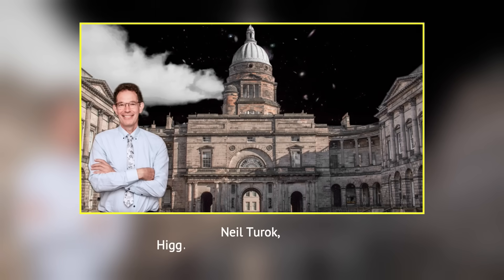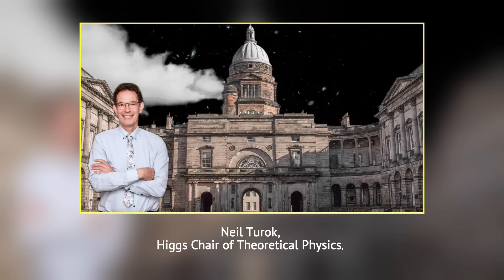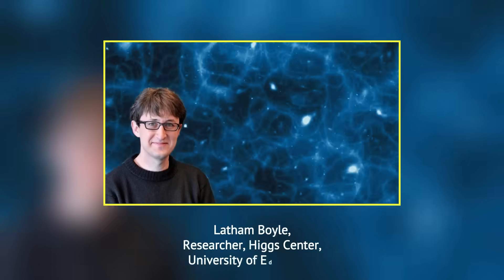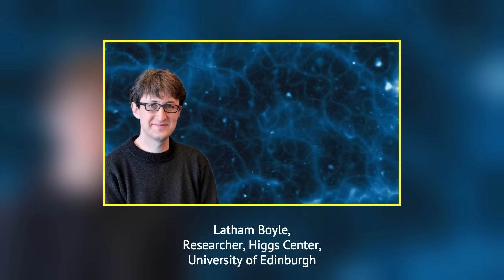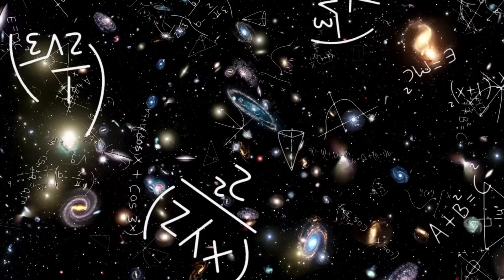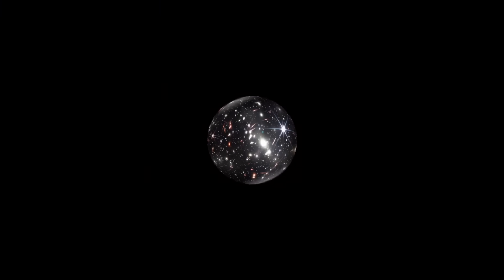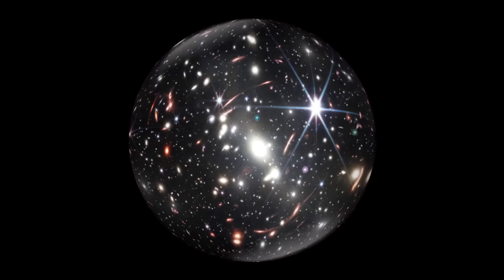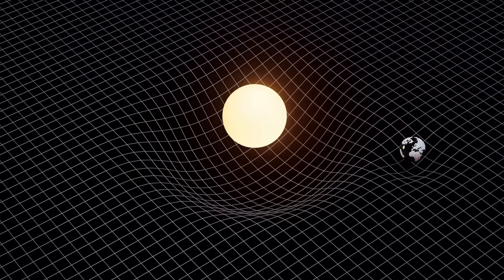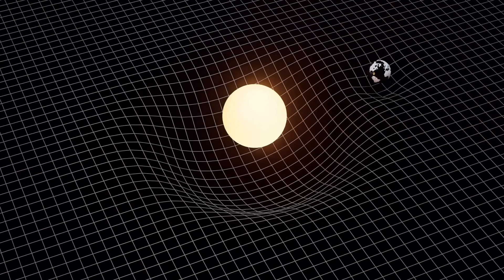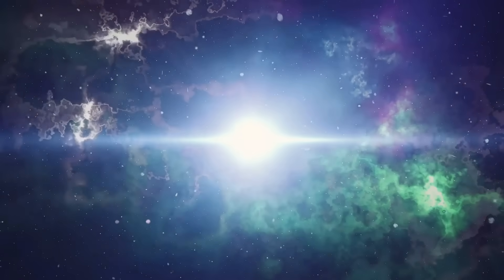That is something Neil Turok, the Higgs Chair of theoretical physics set out to change. Together with his colleague Latham Boyle, Turok approached a new theoretical model that could address fundamental cosmic questions without relying on traditional inflation and string theory. If we use Einstein's theory of general relativity and the known laws of physics to follow the universe backward in time, we arrive at a point where space and time shrink to a single point called the initial singularity.